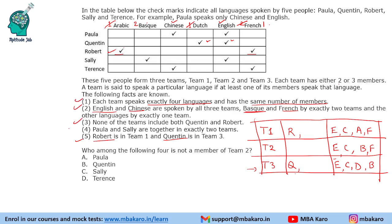Now we need to place the people into these teams. The 4th statement says Paula and Sally are together in exactly 2 teams. Paula speaks Chinese and English, which are universal, so Sally will be the deciding factor. Sally speaks Basque and English; English is universal and Basque is in 2 teams. So Sally will be part of the 2 teams that speak Basque, meaning Paula and Sally will both be in those 2 teams.